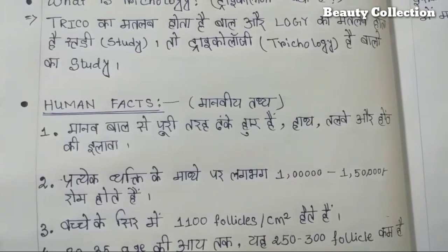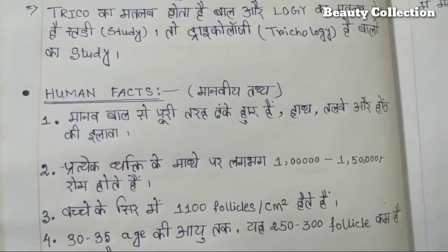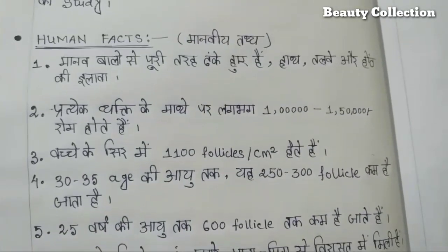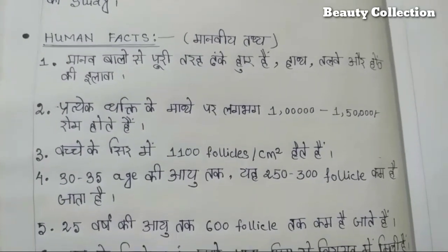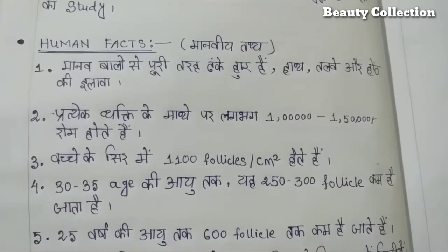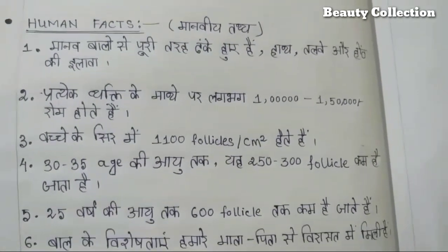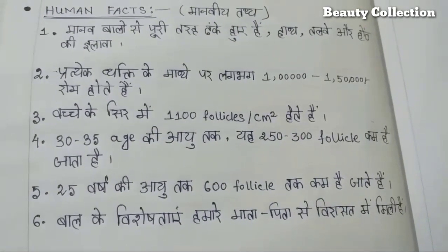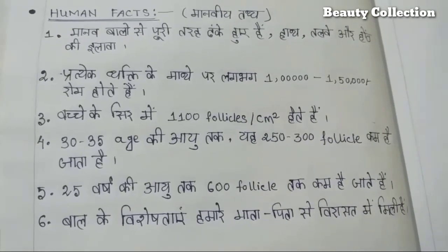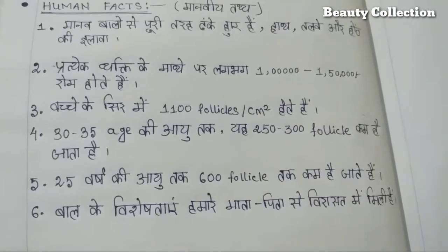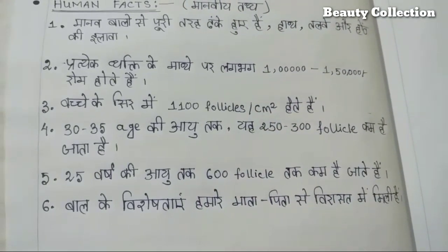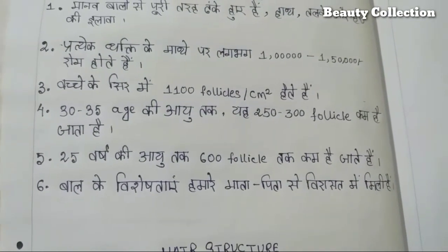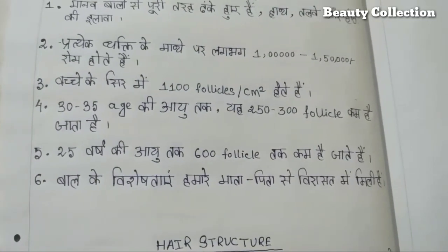Next point is human facts. What are human hair facts? Number one: hair is found all over the human body except the lips area. Number two: every human has around 100,000 to 150,000 hairs. Number three: the follicle count is around 1,100. Number four: from ages 30 to 35, there are 250 to 300 follicles. Number five: at 25 years, there are around 600 follicles. Number six: hair is found in the blood.